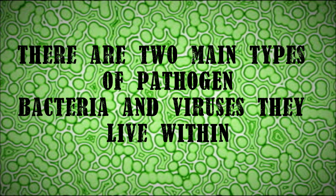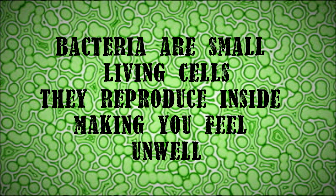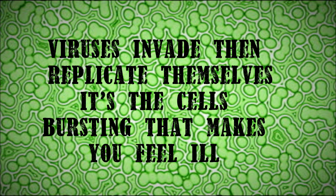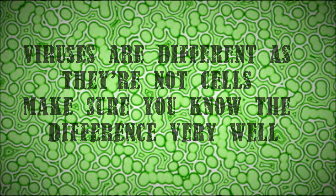There are two main types of pathogens: bacteria and viruses. Bacteria are small living cells that reproduce inside you, making you feel unwell. Viruses invade and replicate themselves inside cells, and that's what makes you feel ill. Viruses are different as they're not cells — make sure you know the difference very well.